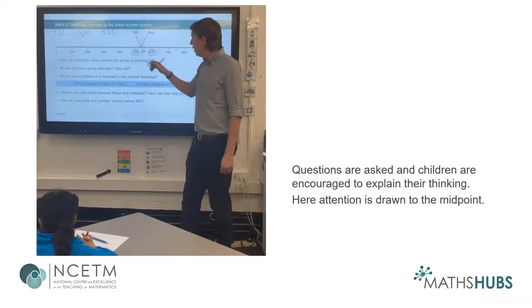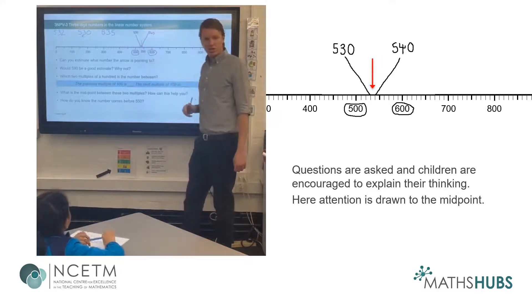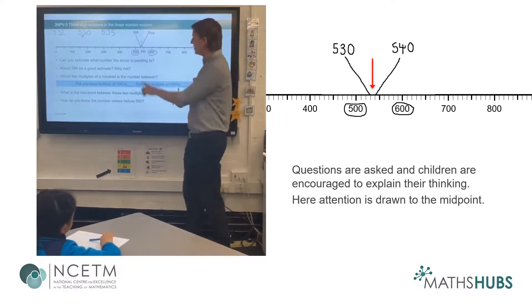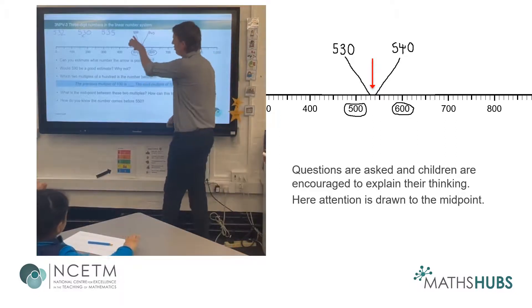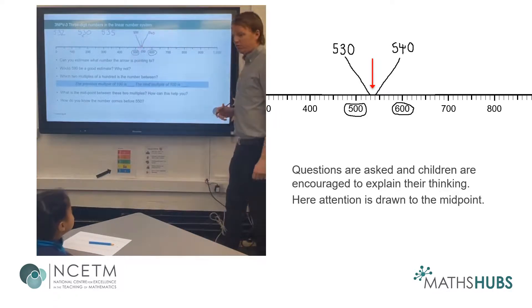Having asked all the children for their estimates, the teacher then asks further questions, drawing attention to the midpoint. Where is it in relation to those two marks? We can use some language we've already used today. Where is the arrow in relation to the line that's 530 and the line that's 540?